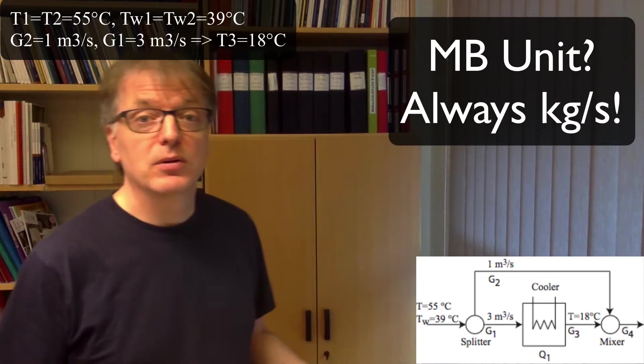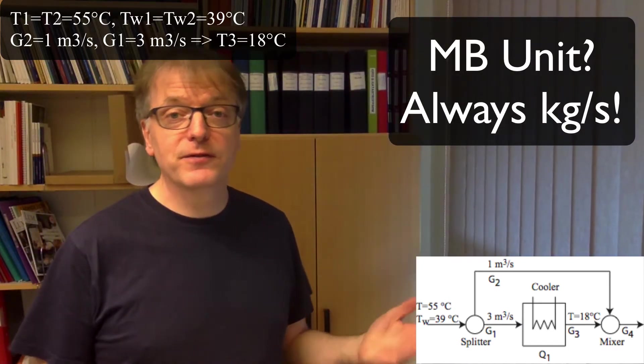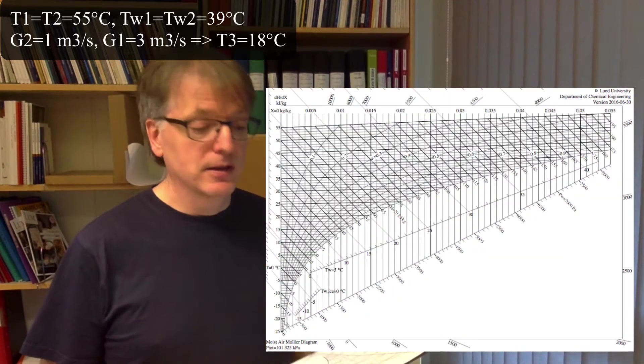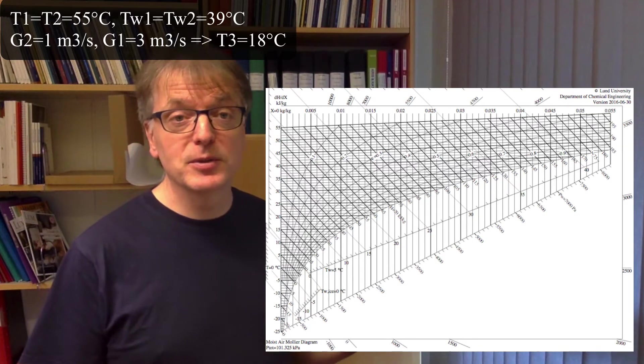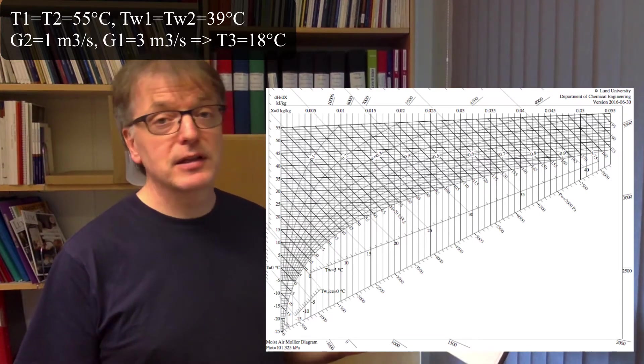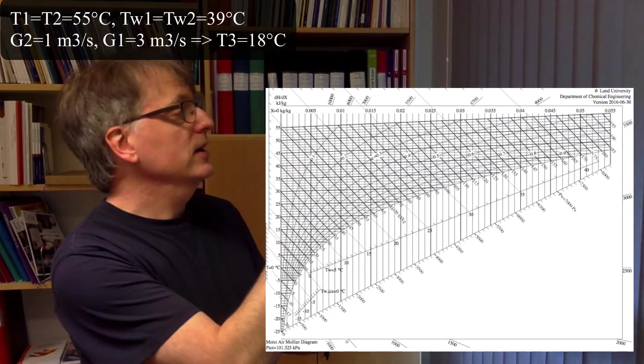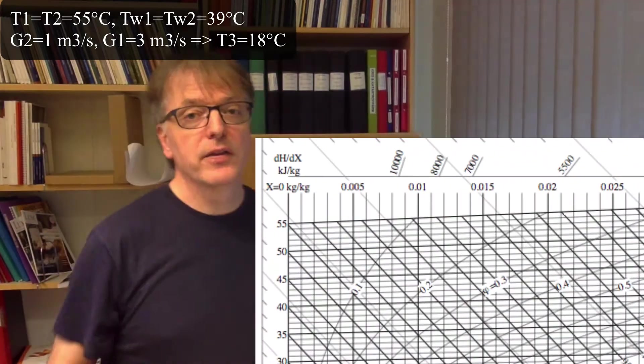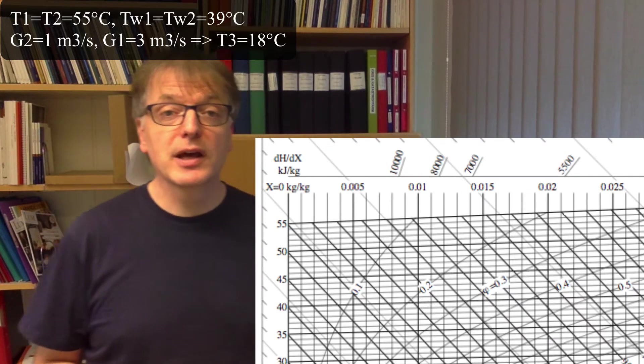The first thing we do when we solve these kinds of problems is to pick up our Mollier diagram and find the state of the different airs in it. G1 and G2 have the same state variables: 55 degrees Celsius and a wet temperature of 39. So you find the 55 degrees line and then you should find the intersection of that line and the 39 degrees wet temperature line.